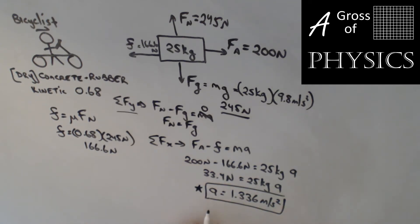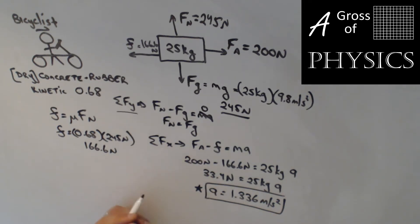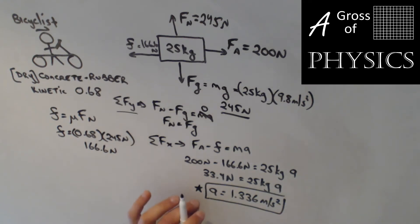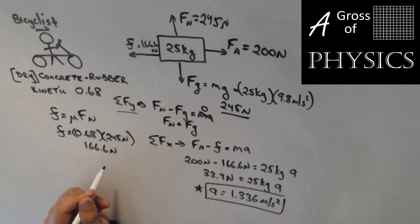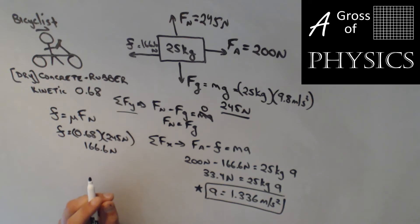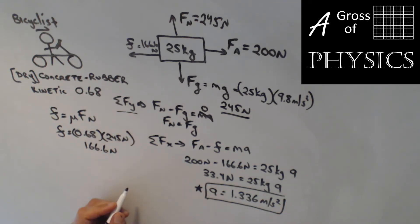Remember that free body diagrams and Newton's second law are useful for finding the acceleration of the object. We can then take this information and solve for final velocity, displacement, or time using kinematics equations. For this problem, the acceleration is 1.336 meters per second squared.